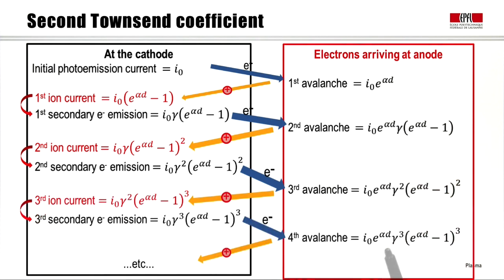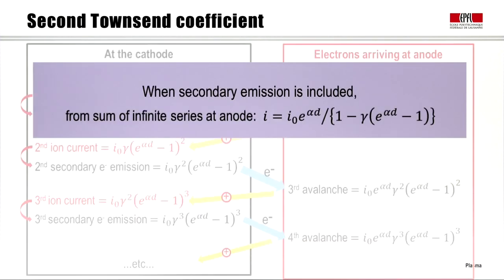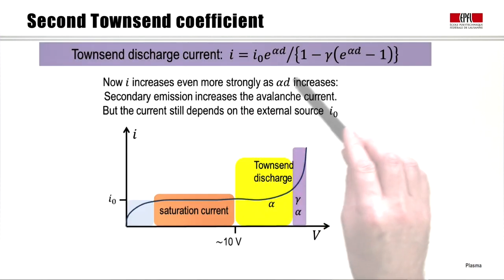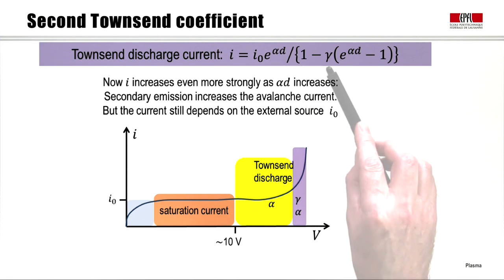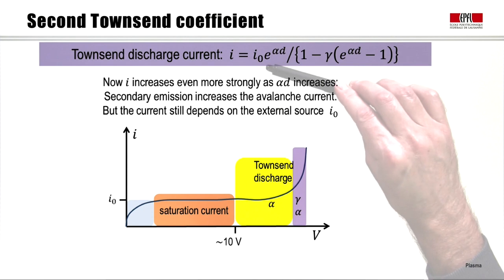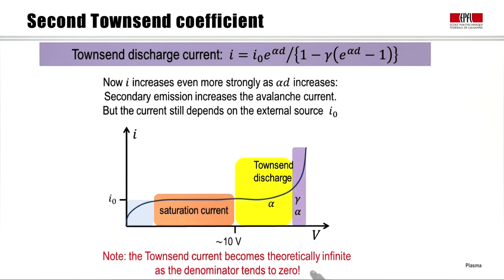So we can see that we have here a geometric series with a constant value I0 e to the alpha d, multiplied by a factor gamma e to the alpha d minus 1. This is the ratio between successive avalanches. The sum of a geometric series is the constant divided by 1 minus the ratio, and therefore when secondary emission is included, we find that the sum of the infinite series of all the avalanches gives this current at the anode. So now we see the Townsend discharge current, due to the first Townsend coefficient and the second Townsend coefficient, increases the current even more strongly. This current still depends on the external source I0. But note that the Townsend current will become theoretically infinite, as the denominator here tends to zero.